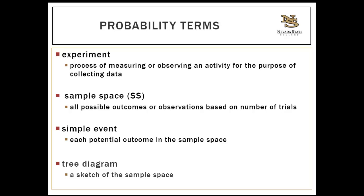Some terminology: an experiment is the process of measuring or observing an activity for the purpose of collecting data — for example, observing the condition and method of arrival for hospital patients at St. Rose in a 24-hour period, or rolling a six-sided die. The sample space, abbreviated SS, represents every single possible outcome based on the number of trials. A simple event is any potential outcome in the sample space.